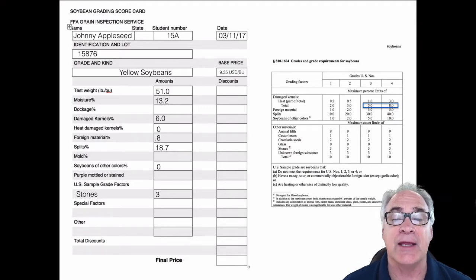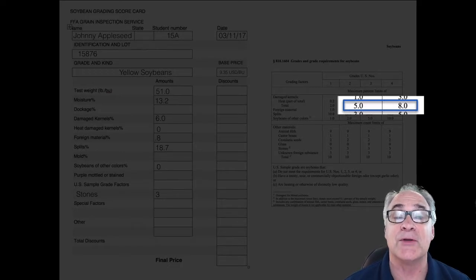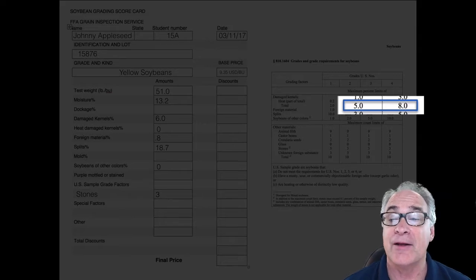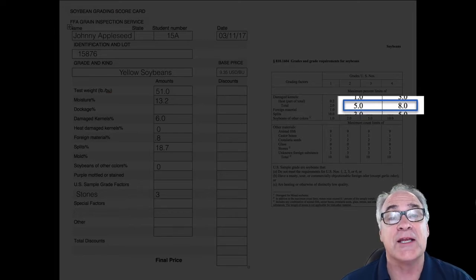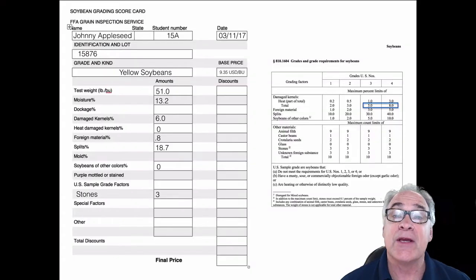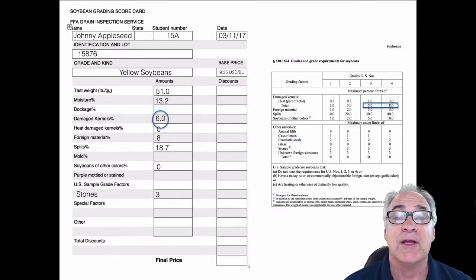Make sure you read it very carefully because all the grades and all the things in those that are important in those grades are listed either maximums or minimums. Make sure you read that carefully as we go through it. First thing we're going to look at is total damage kernels. If you take a look at 6 percent and if you look at the highlighted area, it's between grade three and grade four, so the maximum on grade three would be 5 percent, but it's six so you go to grade four.